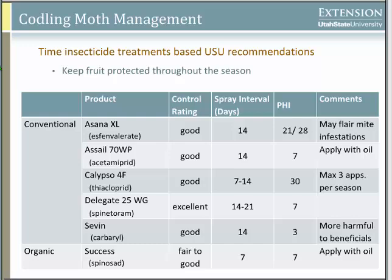The product Delegate is probably the best option for codling moths — it lasts about 21 days and works fairly well. The PHI column stands for pre-harvest interval, the period from the last application to harvest. For example, ASANA requires waiting 21 days for apple and 28 days for pear before the fruit can be eaten.